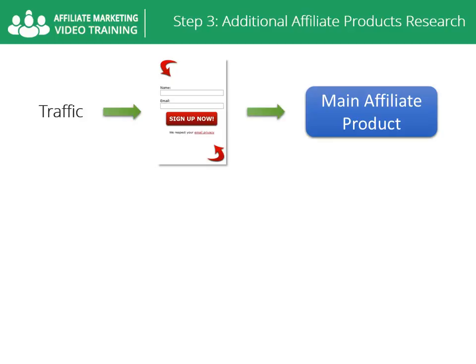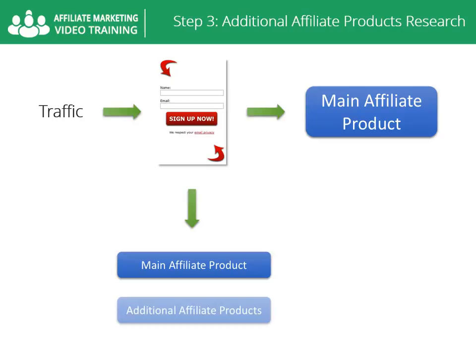Besides sending your new subscribers straight to your main affiliate product, they will start receiving your emails talking about and pre-selling the main product you'll be promoting. You will prepare several emails to promote that product to your list. Then you will also start promoting directly related offers that come after the emails promoting the main affiliate product — and this will happen for days, weeks, months, and years to come, all 100% automatic. That, my friend, is what is called making money on autopilot, and you will know exactly how to do that in the coming steps.